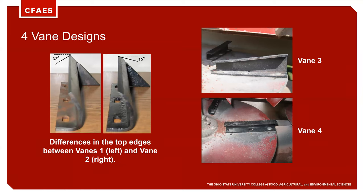Here are the four veins. On the left side, you see vein one and vein two — same design other than the top edge of the vein. Vein one had a 32-degree forward-facing top edge. Vein two had a 15-degree backward-facing top edge. Here's vein three, which I would describe as a kind of C-channeled vein, except it was tapered from inside to out when mounted on the disc. And vein four was purely a C-channeled vein, meaning it had a consistent height from inside to outside.